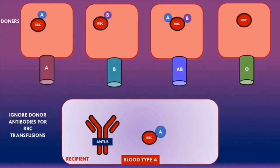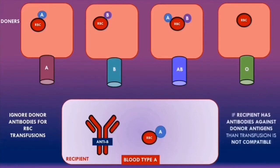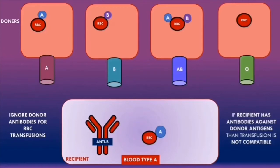For a recipient with blood type A, who has anti-B antibodies, the recipient cannot receive any blood which contains B antigens. If the recipient receives blood containing B antigens, the anti-B antibodies in the recipient's plasma will react with the donor B antigens and cause a hemolytic transfusion reaction. So we must avoid giving patients with blood type A any blood which contains B antigens.